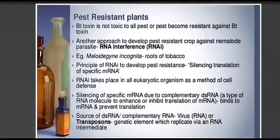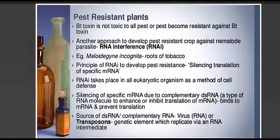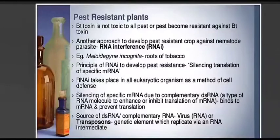In the last lecture we studied the concept of BT cotton, how the BT gene is introduced into crops and produces a protoxin — a crystal protein — which when ingested by insects causes their death. That concept has many criticisms because many environmentalists believe BT may indirectly cause problems in human beings if it enters the food chain. So there is another novel method for developing pest resistance in plants called RNA interference.